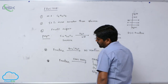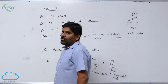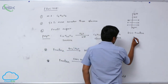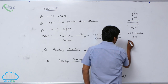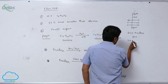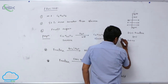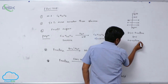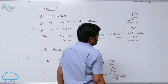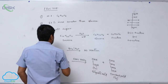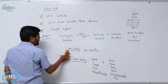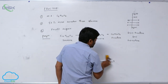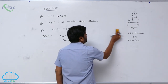It is a levorotatory compound, and that is the reason why it is known as levulose. Glucose, on the other hand, is known as dextrose because it is a dextrorotatory compound.